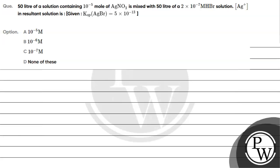The question says 50 liters of a solution containing 10 raised to the power minus 5 moles of AgNO₃ is mixed with 50 liters of 2 into 10 raised to the power minus 7 molar HBr solution. What is [Ag⁺] in the resultant solution? Ksp has been given as 5 into 10 raised to the power minus 13. Option A: 10 raised to the power minus 5 molar. Option B: 10 raised to the power minus 6 molar. Option C: 10 raised to the power minus 7 molar.